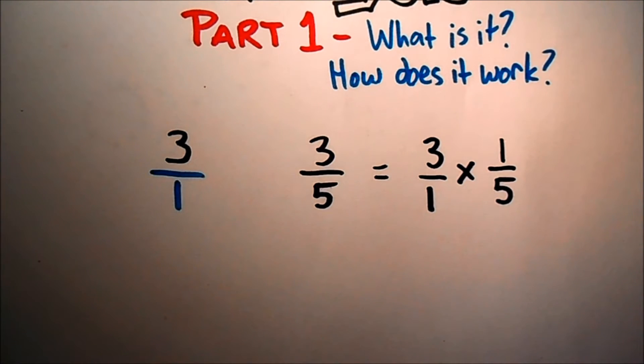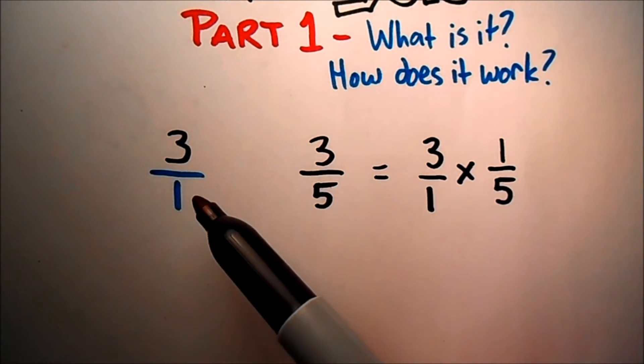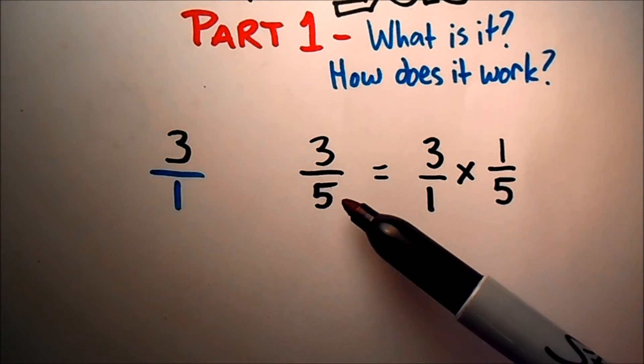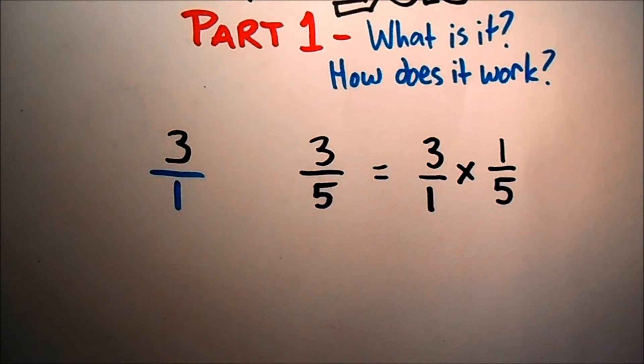So are you comfortable with that? All numbers have a denominator. Sometimes, quite often, it's just an understood 1. And if you divide by something, that's the same thing as multiplying by its inverse. As long as you're comfortable with that, you're ready to learn some things about dimensional analysis.